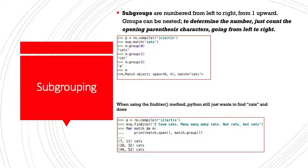Now we get into subgrouping. Subgroups are numbered from left to right from one upward. Groups can be nested. To determine the number, just count the opening parentheses going from left to right. We look here at the code. We see that the pattern is cats. CAT is in one group, and then within that group, we have a subgroup around A, the character A. So if we want to search on cats, we can do so using the group method against our variable M.